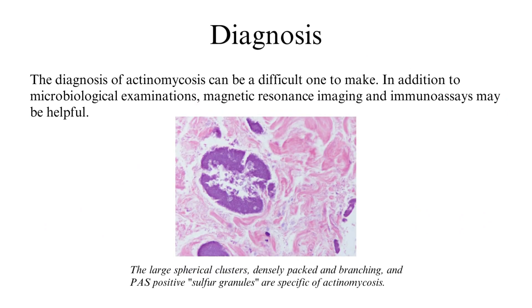Diagnosis of actinomycosis can be difficult. In addition to microbiological examinations, magnetic resonance imaging and immunoassays may be helpful. Large spherical clusters, densely packed and branching, and PAS-positive sulfur granules are specific to actinomycosis.